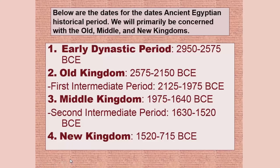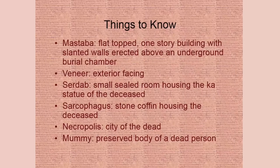In this class we're mostly going to be concerned with the Old, Middle, and New Kingdoms. We won't get too much into the intermediate periods or the late dynastic period. The periods in bold — Early Dynastic, Old Kingdom, Middle Kingdom, and New Kingdom — are our primary areas of focus. Familiarize yourselves with this vocabulary so when I use these words it's easier to picture where they are.